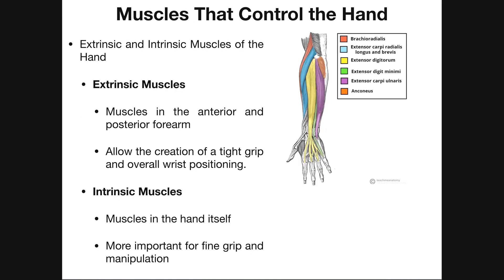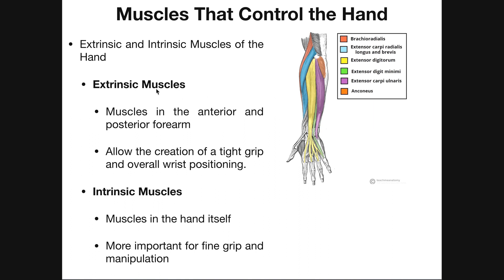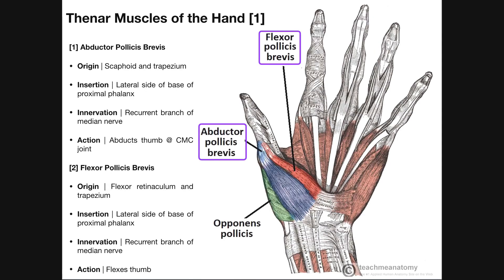In the previous video, we talked briefly about the differences between extrinsic muscles of the hand and intrinsic muscles. Extrinsic muscles were muscles whose bellies existed in the forearm and are able to still produce movements of the hand and in some cases the fingers, but the muscles themselves don't lie in the hand — they lie in the forearm. Intrinsic muscles actually exist in the hand itself. The first group we looked at were the thenar muscles, which control movements of the thumb and are all innervated by the recurrent branch of the median nerve.